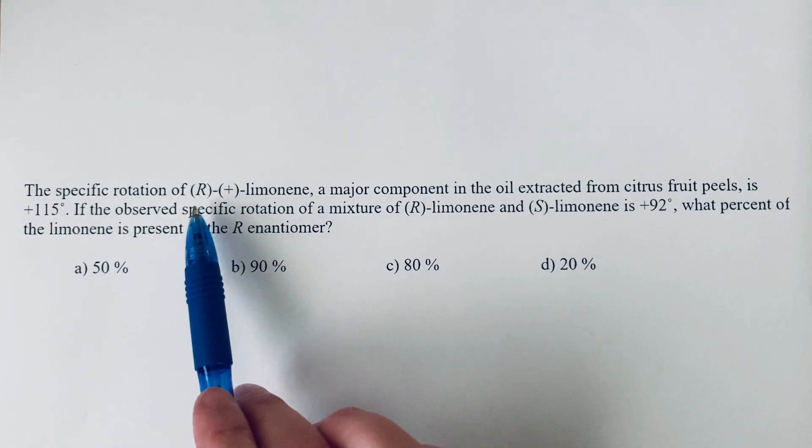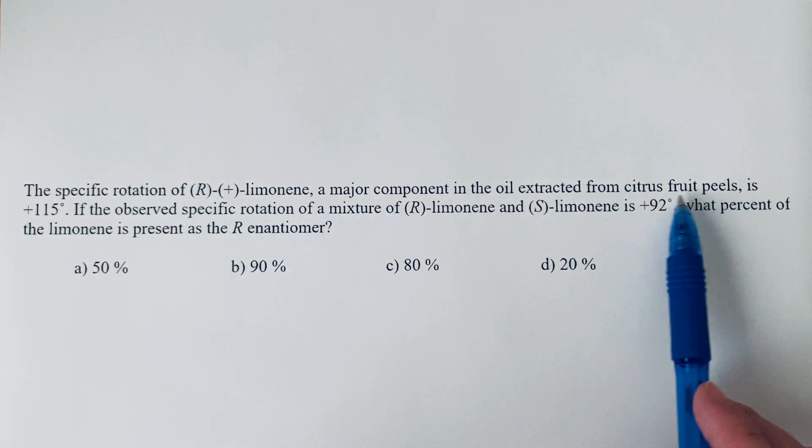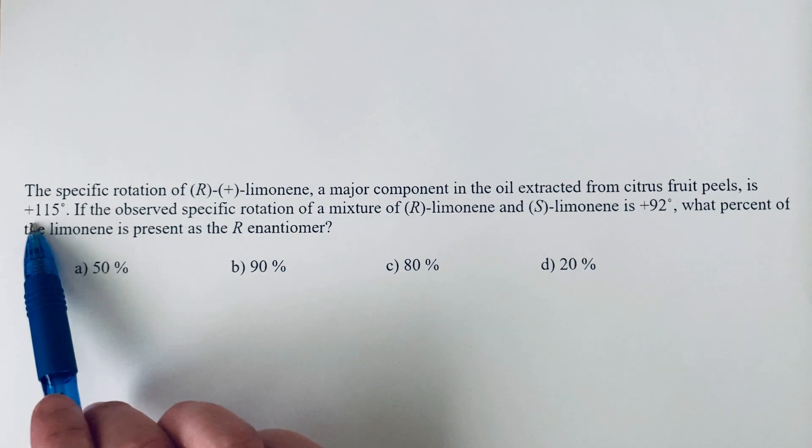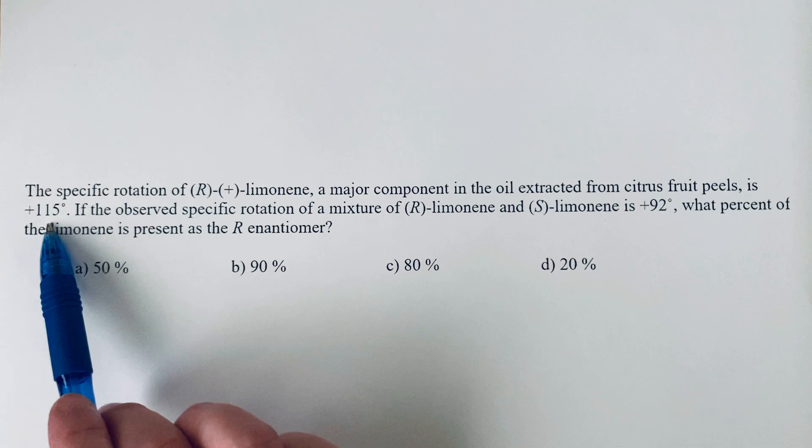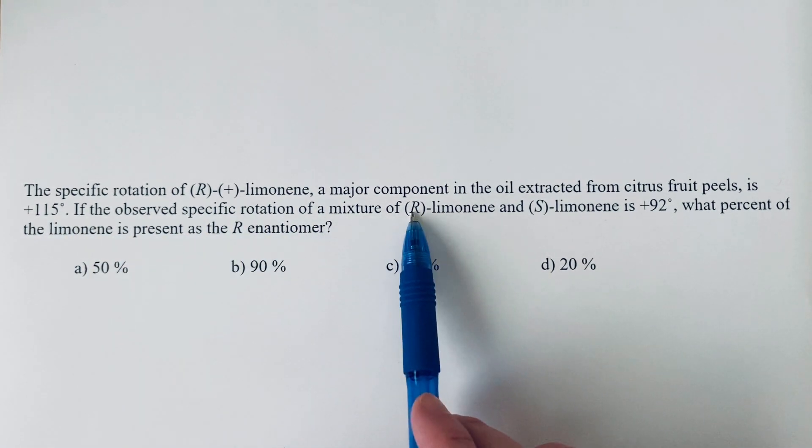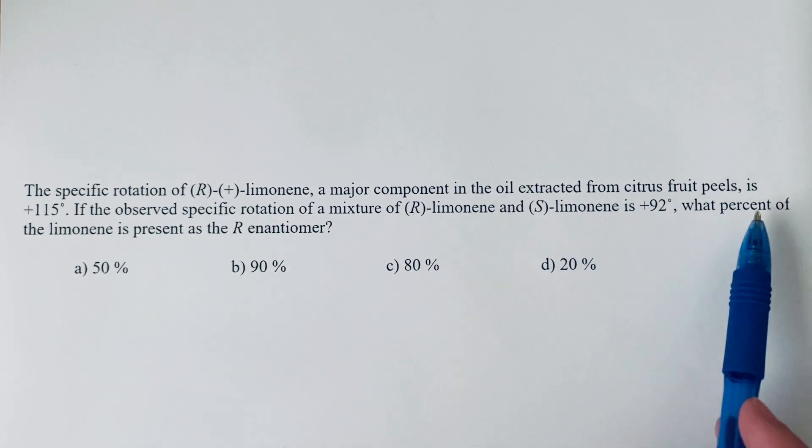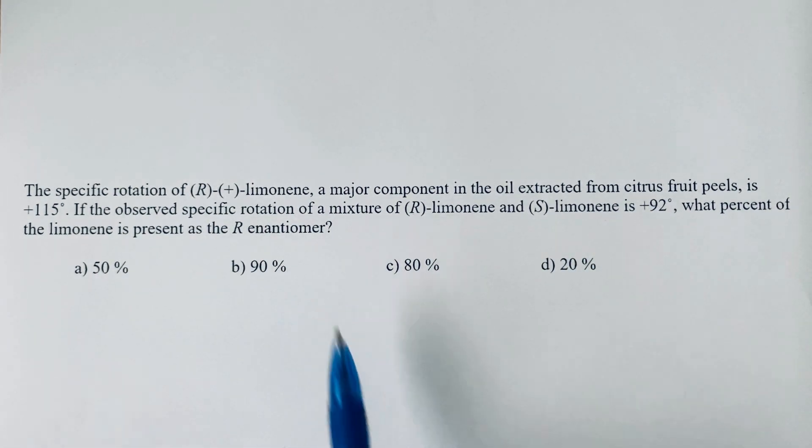The specific rotation of R-(+)-limonene, a major component in the oil extracted from citrus fruit peels, is +115. If the observed specific rotation of a mixture of R-limonene and S-limonene is +92, what percent of the limonene is present as the R enantiomer?